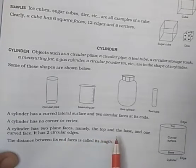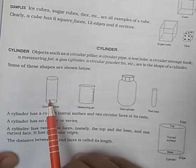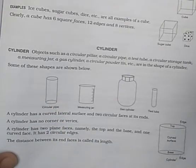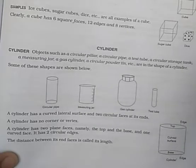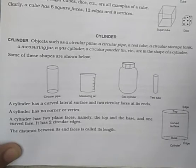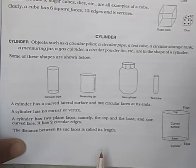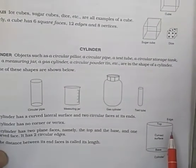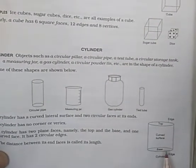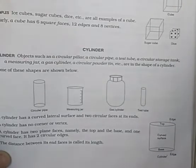A cylinder has two plane faces, namely the top and base, and one curved surface. It also has two circular edges. The distance between its end faces is called its length. Here we can see: this is the top, this is the base, this is the edge, and this is the curved surface.